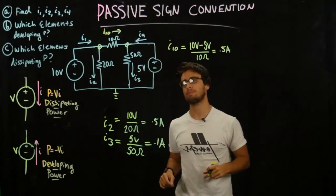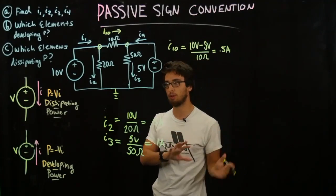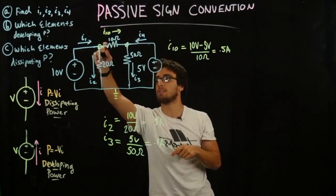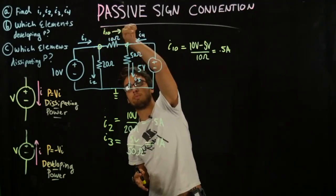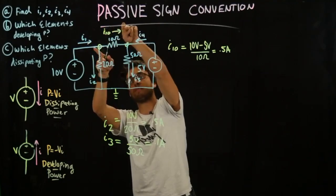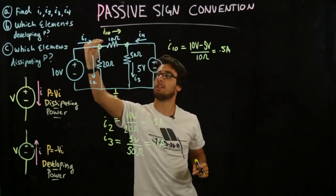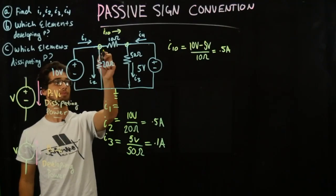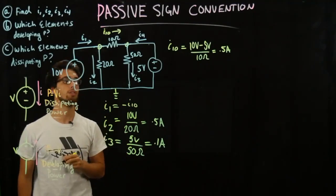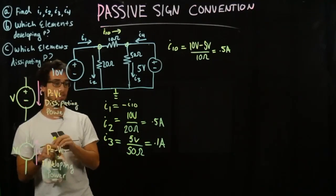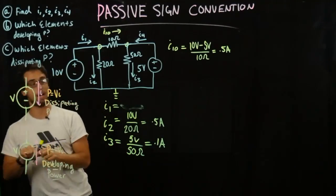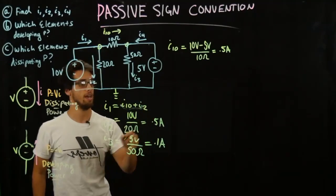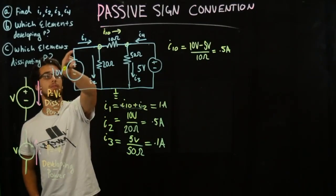Now if we want to find I1, we can easily apply KCL. KCL tells us that any current flowing into a node must come out at the other end. We know that there's 0.5 amps flowing down this branch and 0.5 amps flowing across this branch. Coming out of this node is a total of 0.5 plus 0.5, 1 amp, which means that 1 amp has to be coming in. So by KCL, I1 is the sum of I10 plus I2, and that gives us 1 amp. So I1 is equal to 1 amp.